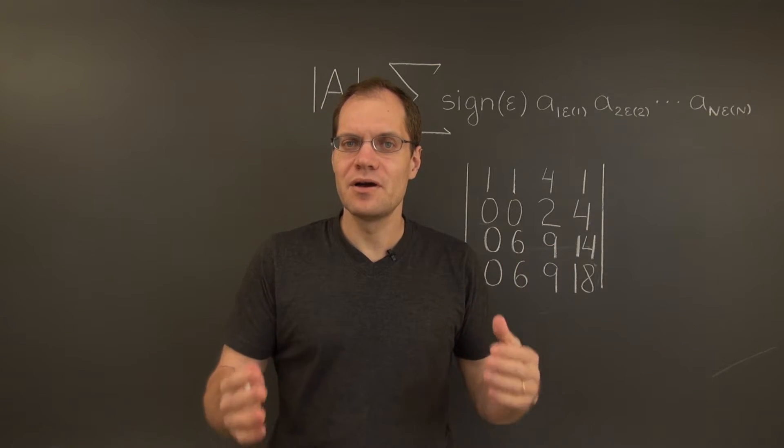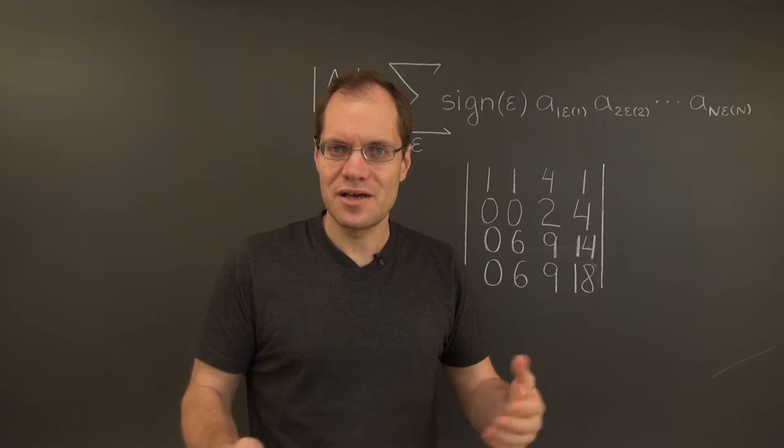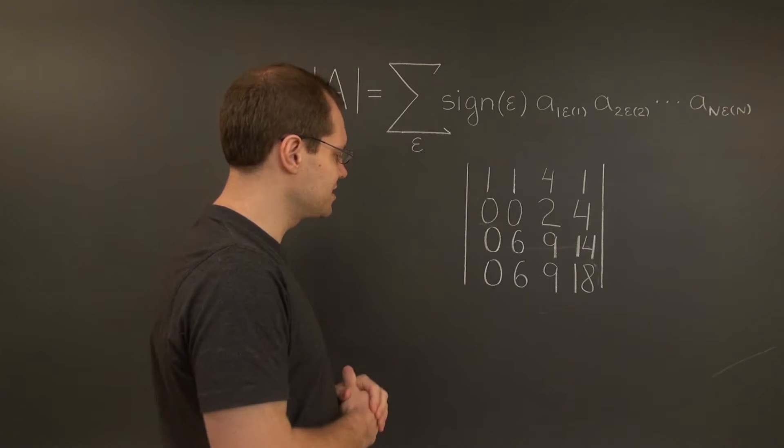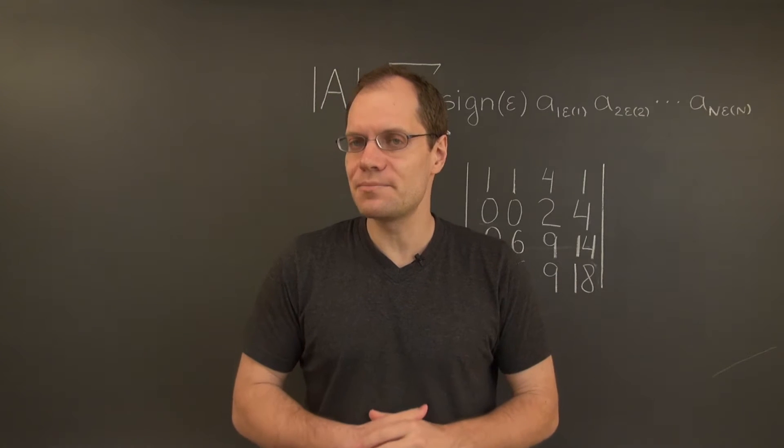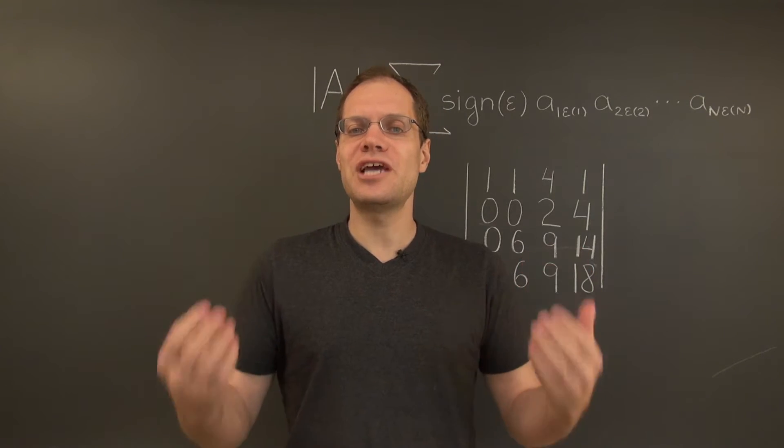But for this step, we must think of the consequence. We must think of the effect of this step on the overall determinant. And by the alternating property, the effect is to change the sign.